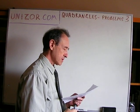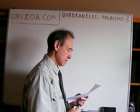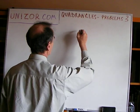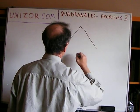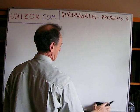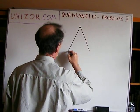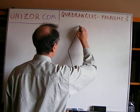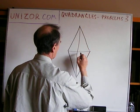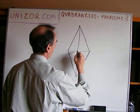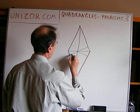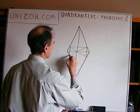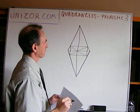Given a rhombus, from the point of intersection of its diagonals we drop perpendiculars to all four sides. Prove that the points where these perpendiculars meet the sides form a rectangle. Since it's a rhombus, we have two diagonals. From the center we drop four perpendiculars — one to each side. We have to prove that the four endpoints of these perpendiculars form a rectangle.